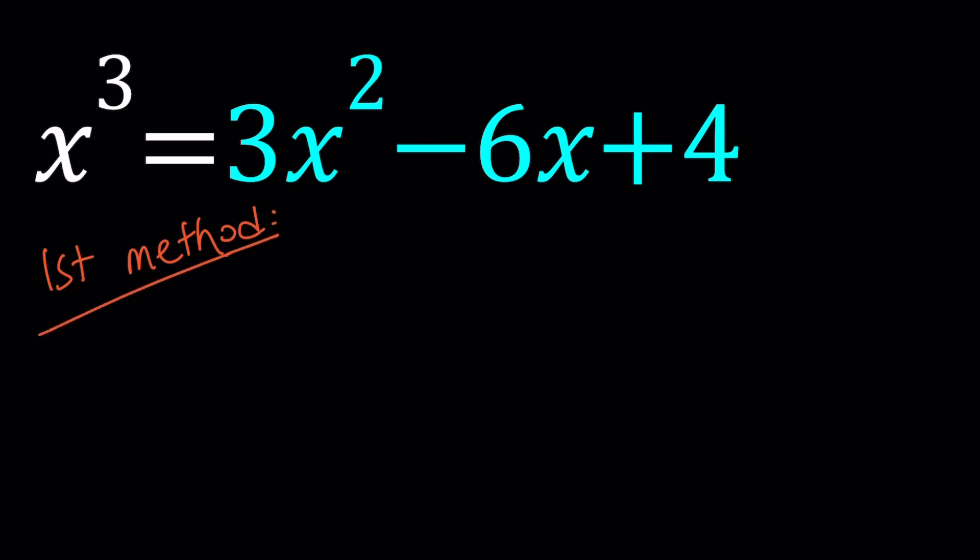So for my first method, I'm going to use the cubic formula. Let's go ahead and put everything on the same side. And then we're going to go ahead and get rid of the x squared, the quadratic term. And to be able to do that, we basically need to use substitution, replace x with something like y plus 1.